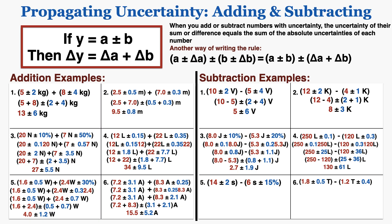In number 5, I have one number with an absolute uncertainty and one with a percent uncertainty, so I only convert the percent uncertainty to absolute. I then add the absolute uncertainties together and subtract the numbers to get my answer, making sure to round the uncertainty to the correct number of decimal places.